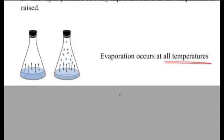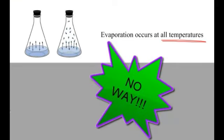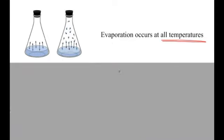Vaporization or evaporation occurs at all temperatures, and it's important to remember that because we're working towards a definition of boiling point. Early in the year I defined boiling point as the temperature at which a liquid turns into a gas — and that's not really true. We can say the same thing about evaporation. How is evaporation different from boiling? Many students say you've got to heat it to be boiling, and that's not really true. In class one day I'm going to boil some water without heating it. Evaporation occurs at all temperatures; boiling point only occurs at one specific temperature.